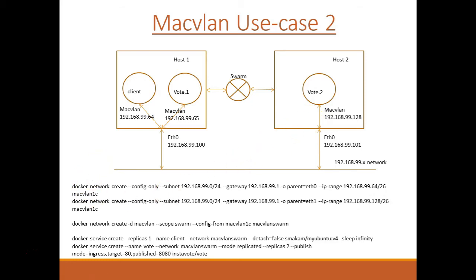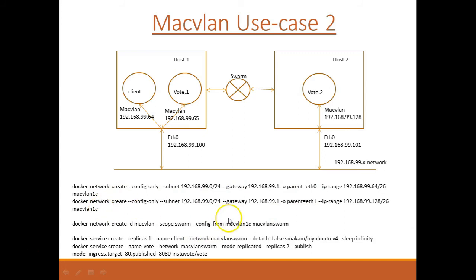With 17.06, I can create services — not just Docker run containers — even MacVLAN services. There are two steps. First, we do a Docker network create — we create one MacVLAN network for each host with a specific address range, for example using the 99.64 address range. Then, in the swarm master, we create a MacVLAN swarm network, using 'config from' referencing the MacVLAN name created on each host. Once created, the MacVLAN network becomes swarm-wide in scope, and we can create the client service and the vote service.